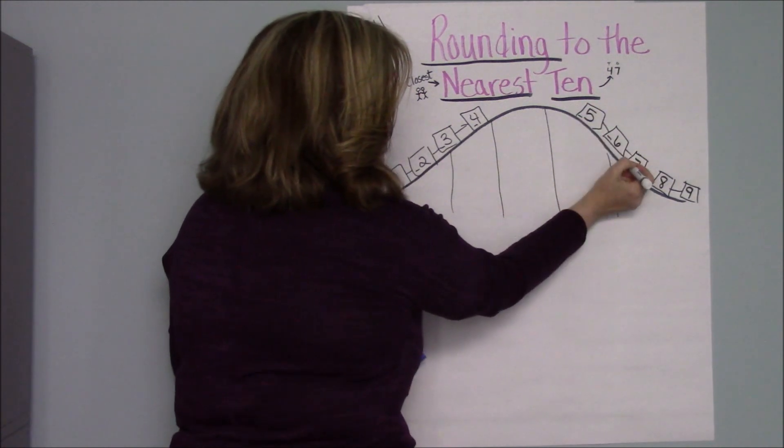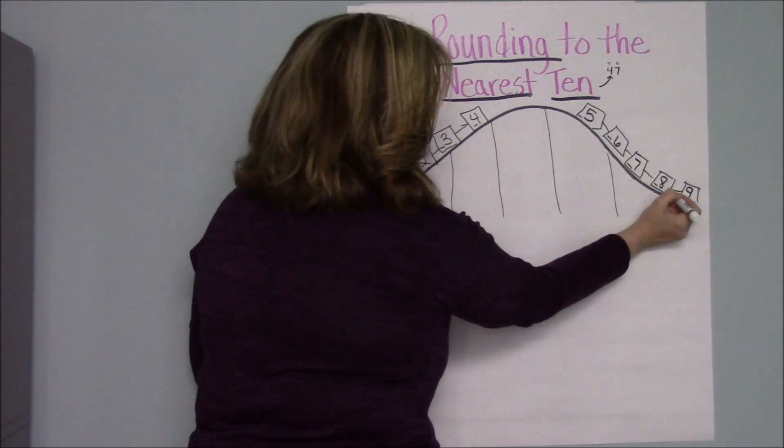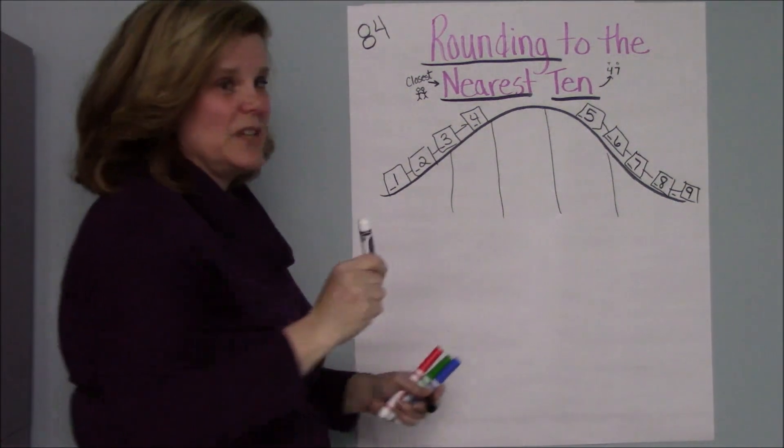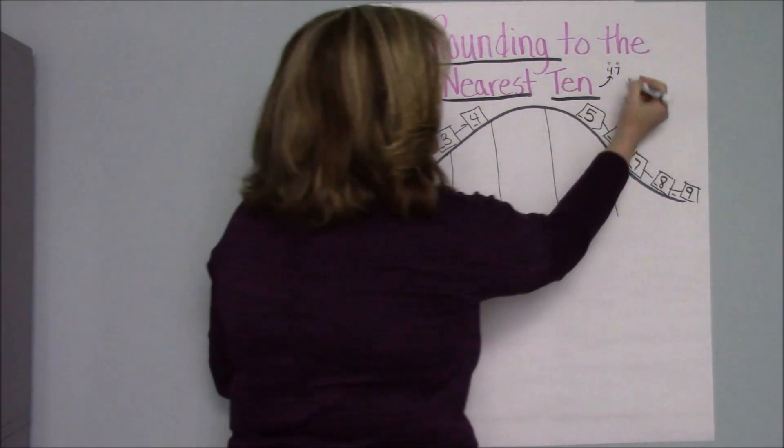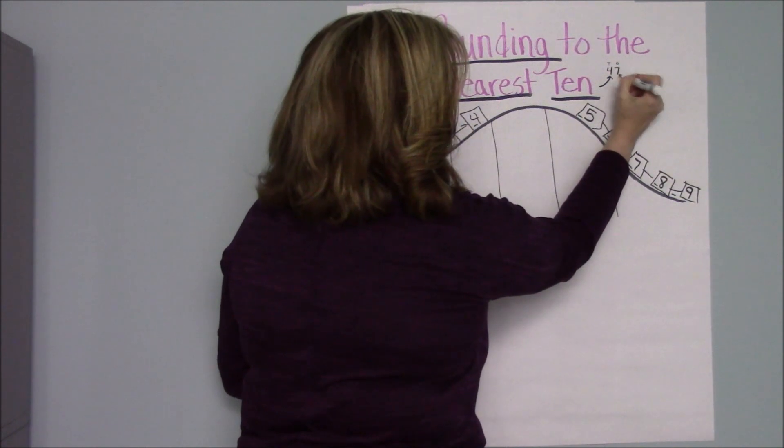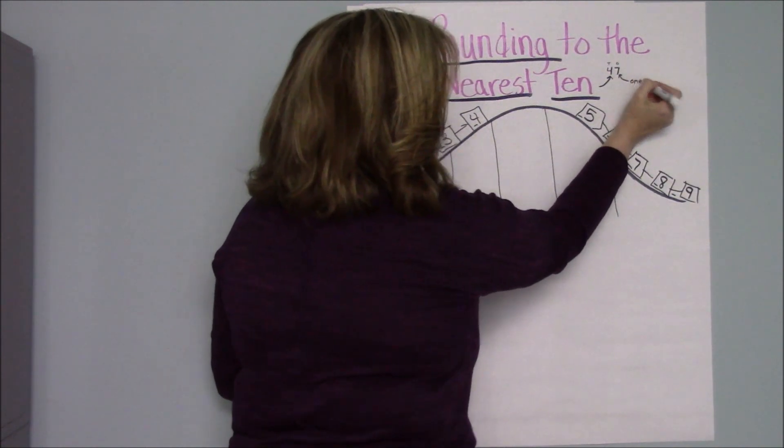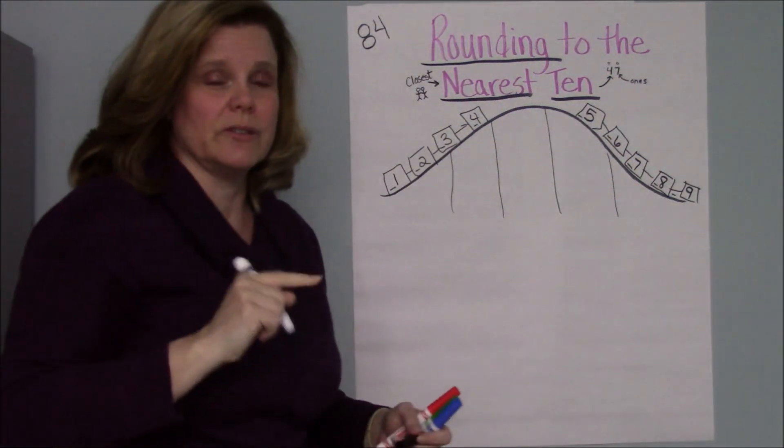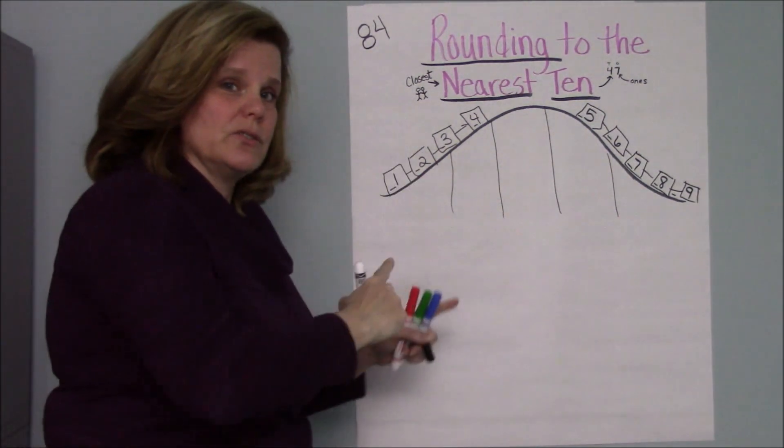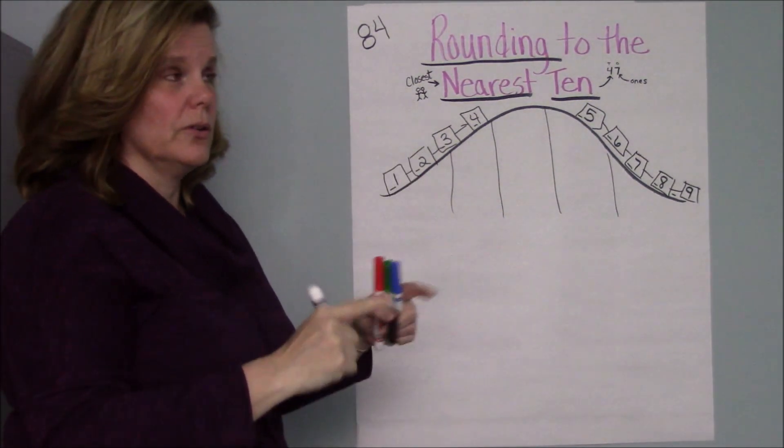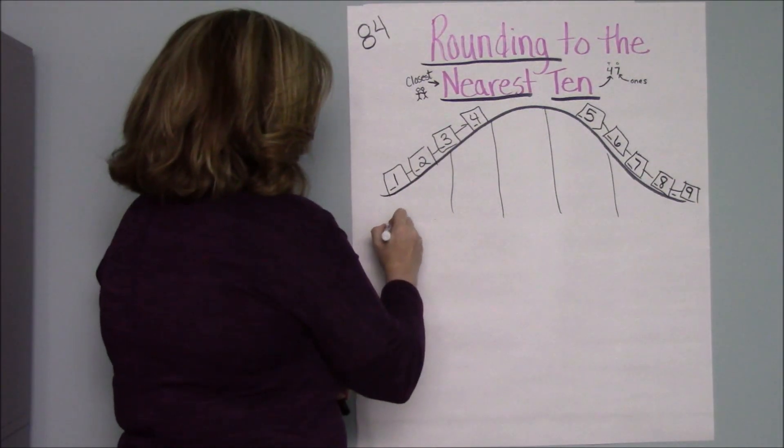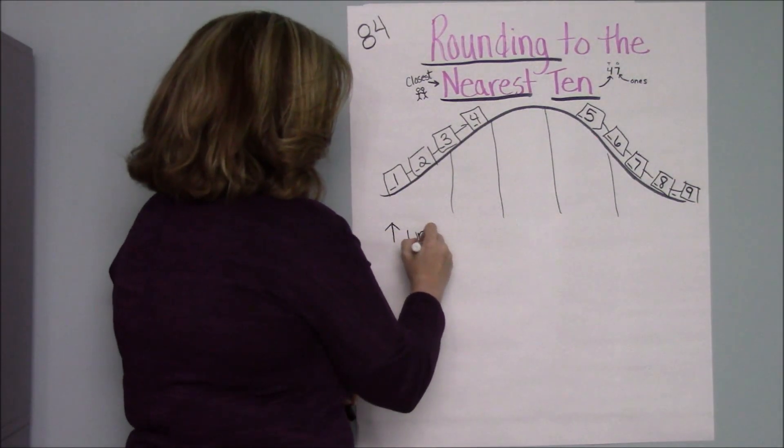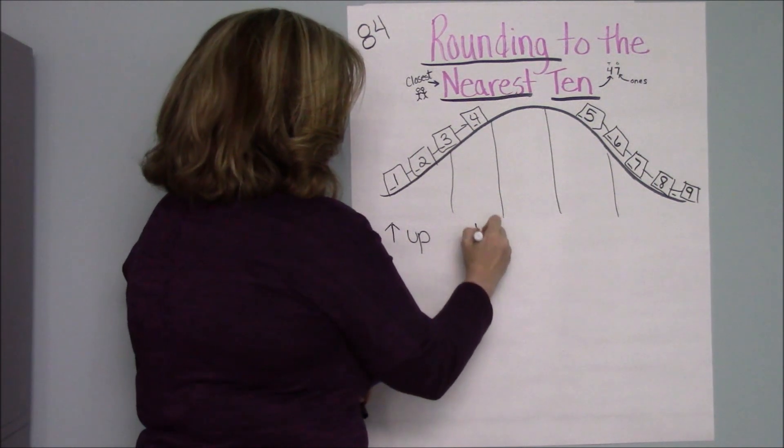And remember those are in the ones place. Which makes me think there's another word that you need to know. We talked about the tens place. But you also need to know the ones place because the ones place is what's going to give us the number that tells us whether we're rounding up or rounding down.